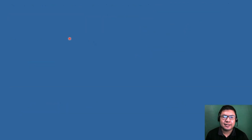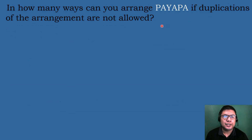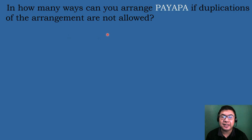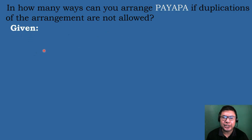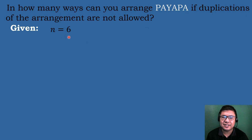Let's have our second example: In how many ways can you arrange 'payapa' if duplications of the arrangement are not allowed? Let's identify the given. The value of N, or the number of letters, is equal to 6: 1, 2, 3, 4, 5, 6. There are 6 letters or 6 objects.